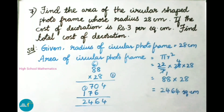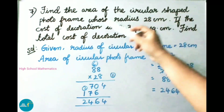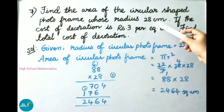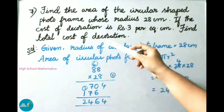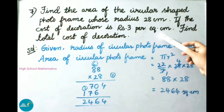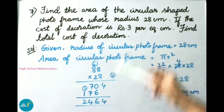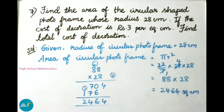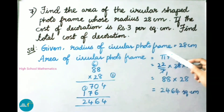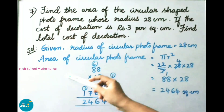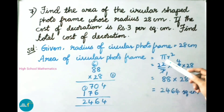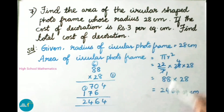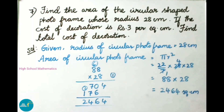See now question number 7. Find the area of the circular shaped photo frame whose radius is 28 cm. If the cost of decoration is 3 rupees per square cm, find the total cost of decoration. Given radius of circular photo frame is 28 cm. Area of circular photo frame equals pi R squared, that is 22 by 7 into 28 into 28.